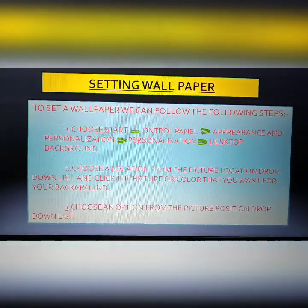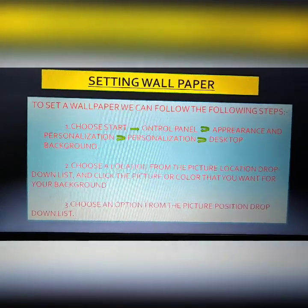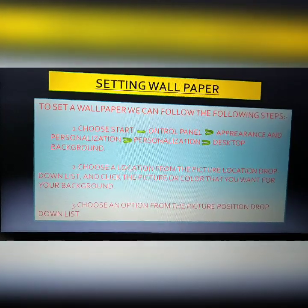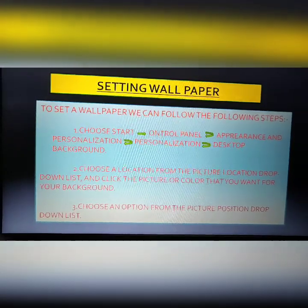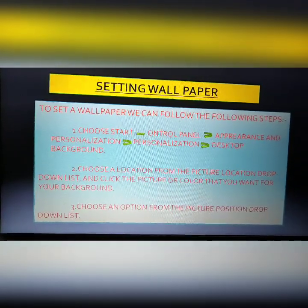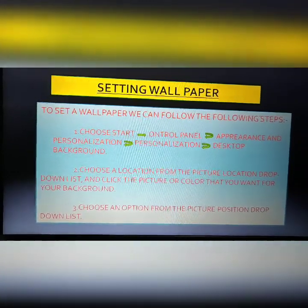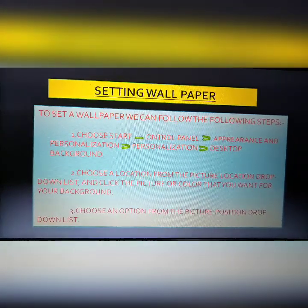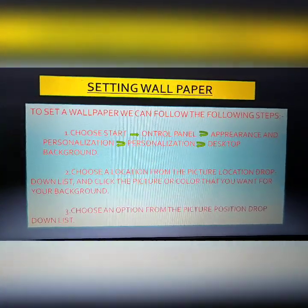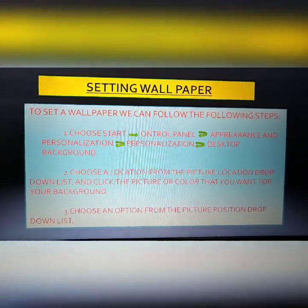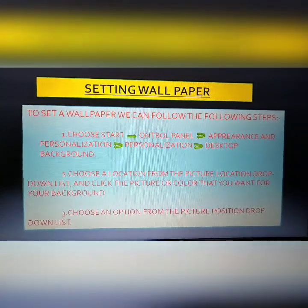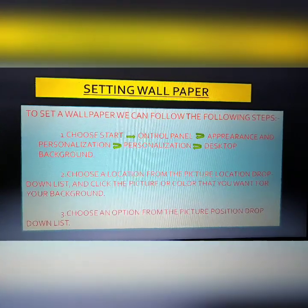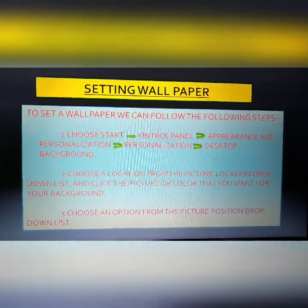Third, choose an option from the picture position drop-down list. To summarize: click the Start button, then click Control Panel. Under Appearance and Personalizations, click on Personalizations, then click Change Desktop Background. Select a picture of your choice from the available pictures. Click the Save Changes button. The selected picture will then appear as your desktop background.